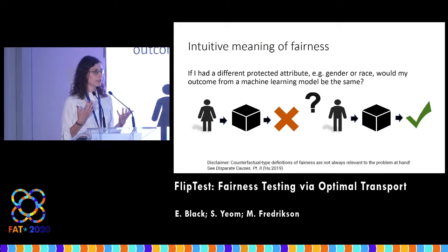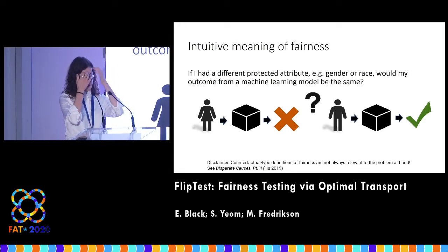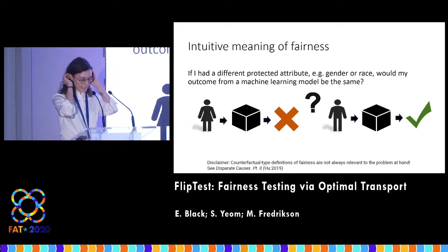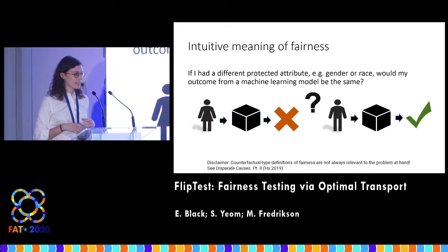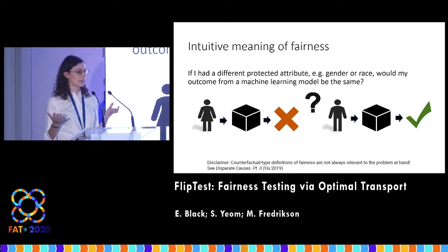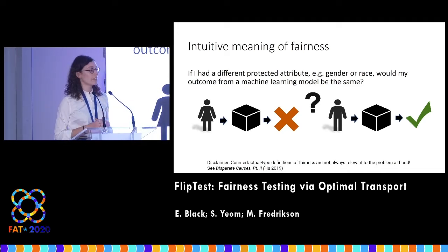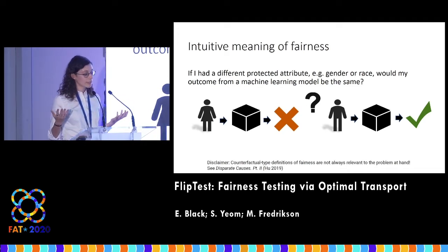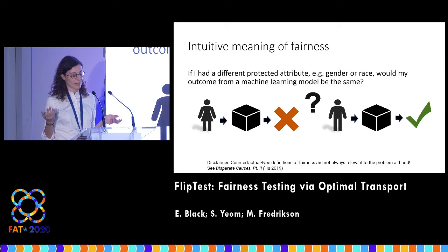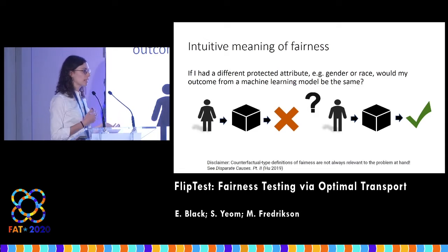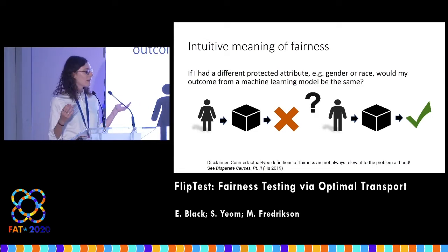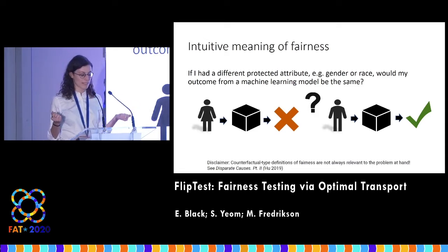Say I applied to my dream job through a machine learning application process and got one outcome. I would hope that if I had been born a male, I would be treated the same way by the model. If I was treated differently, perhaps this would point to some potential discrimination by the model on the basis of gender.